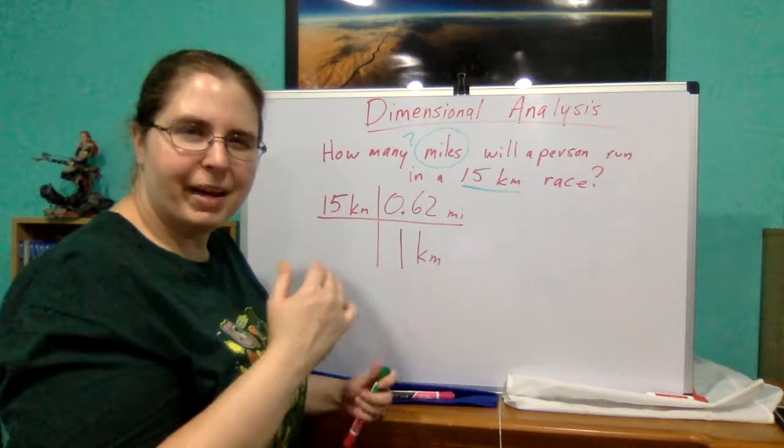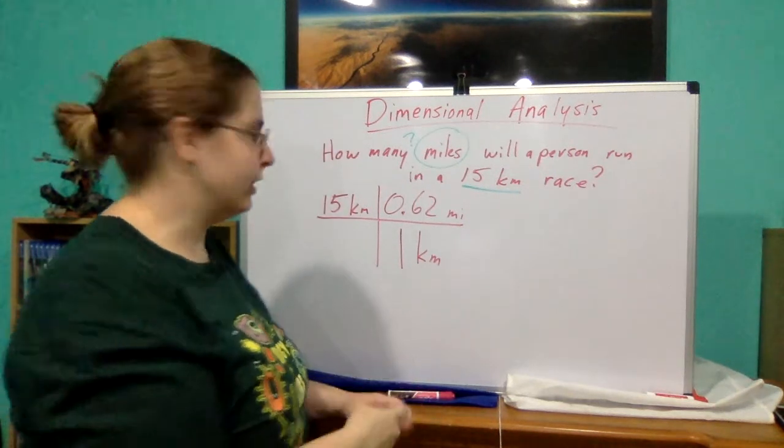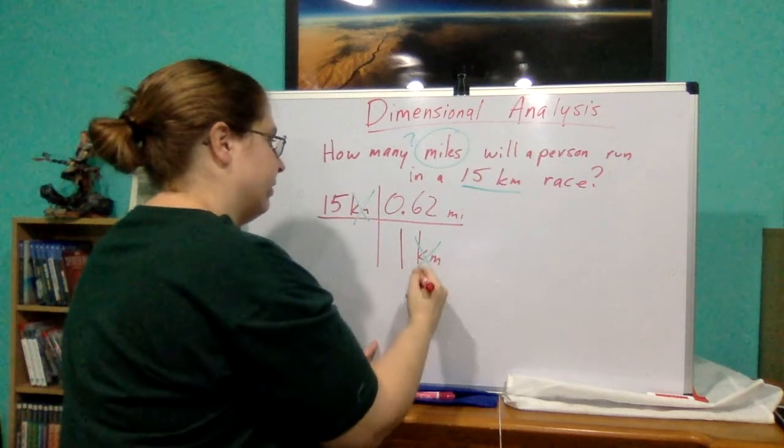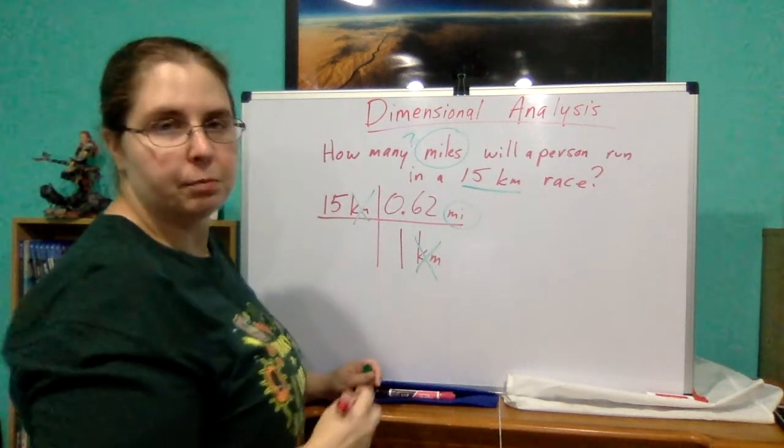Remember how, like in math, if you had the same value, you can reduce it and cancel them out? It's the same way with units. Kilometer on the top, kilometer on the bottom, cancel out. And now, we're only left with the unit of miles.